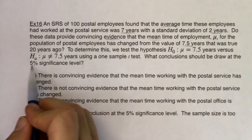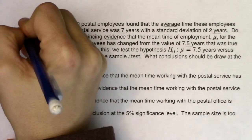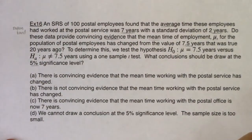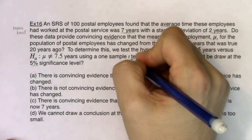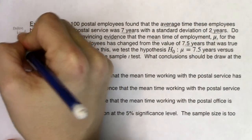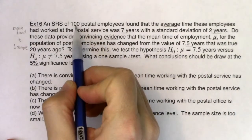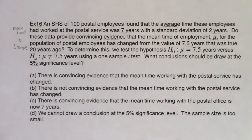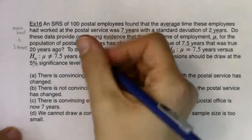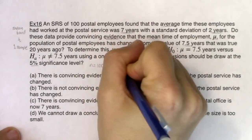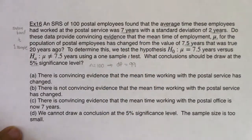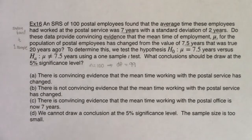What conclusion should we draw at the five percent alpha level? I'm in mean land. I'm going to use a t-test. I only have the one sample - they only ran this survey once, and I had 100 postal employees. So N is 100, giving me 99 degrees of freedom. I want us to get in the habit of using technology to help us go through these problems faster.